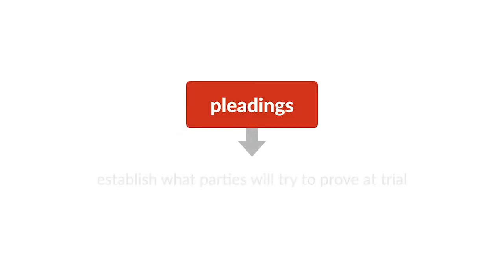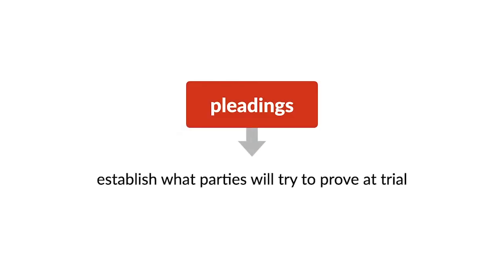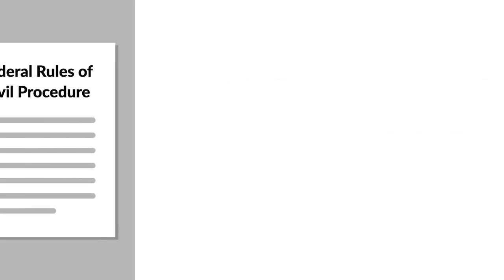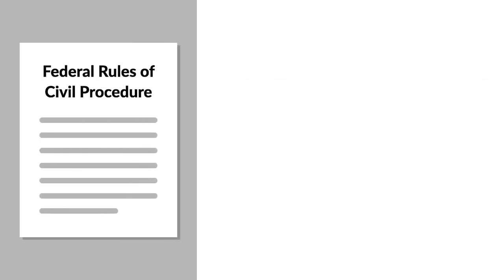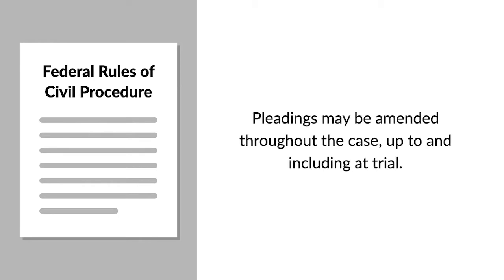A lawsuit's pleadings establish what the parties will try to prove at trial. To accommodate issues that arise as a case proceeds, the federal rules of civil procedure allow the pleadings to be amended throughout the case, up to and including at trial.